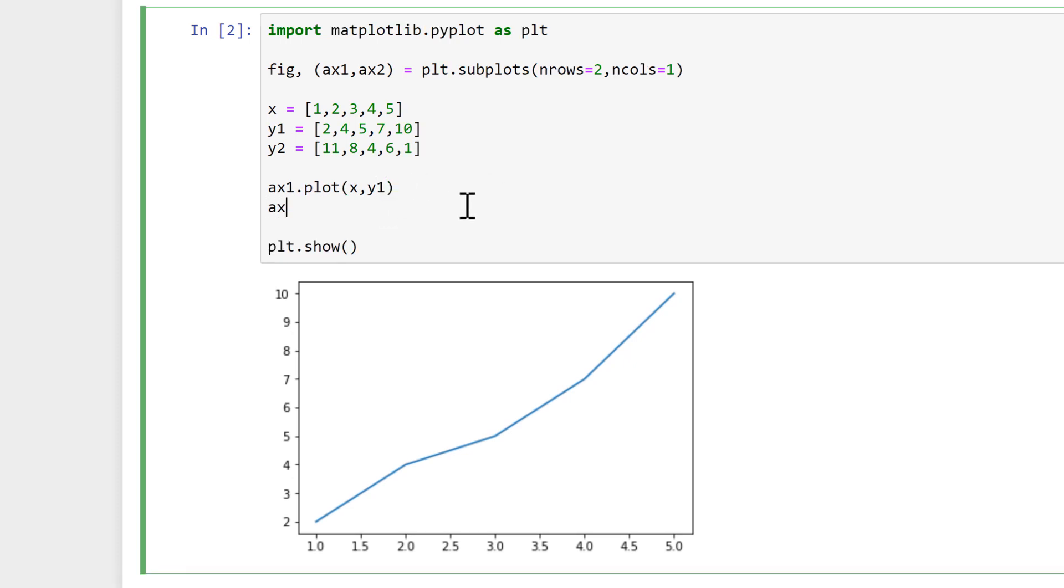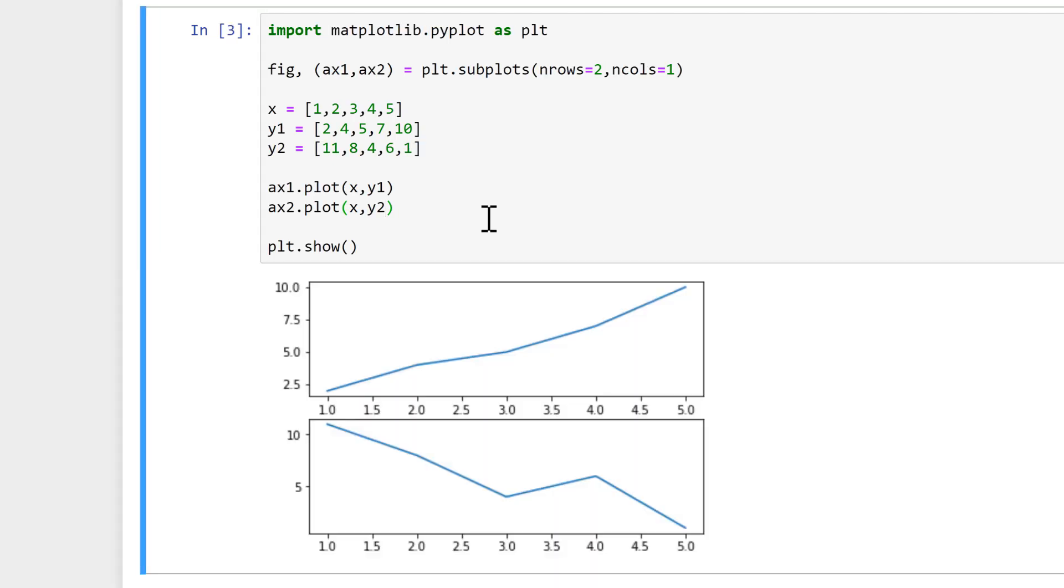Then I'll add in ax2.plot, and we will plot the x and the y2 values. And now we have two subplots. The figure is the whole thing, and then axes 1 and axes 2 are the subplots.